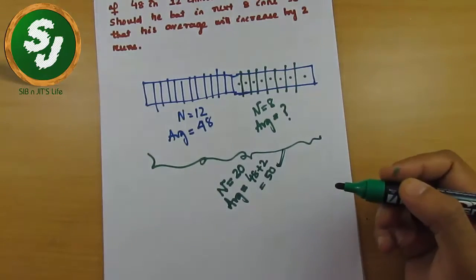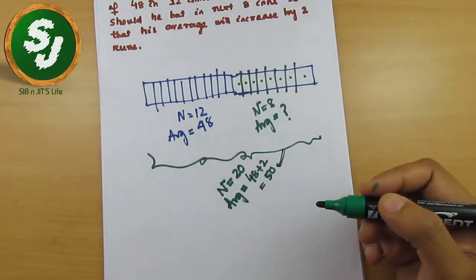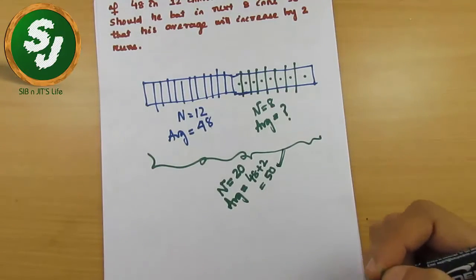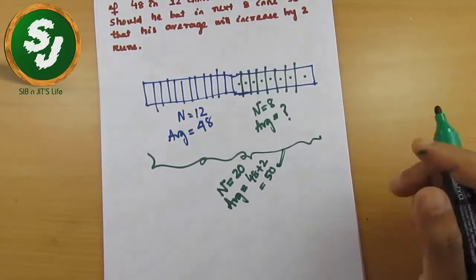Exactly the same way. Just remember that in the last question where the batsman was Kohli, the question was asking what score he will hit in 1 inning so that his average will increase by 2 runs.